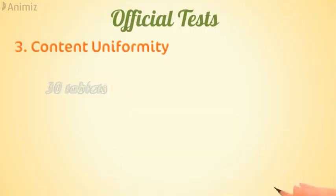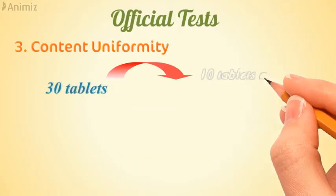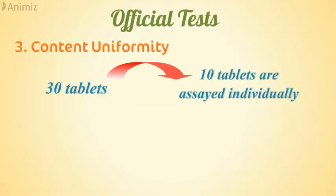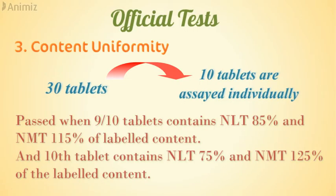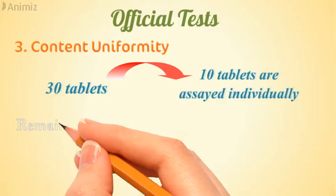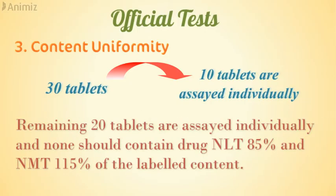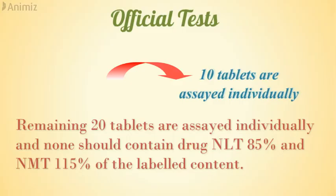The third official test is the content uniformity test. Thirty tablets are taken and 10 are assayed individually. The test passes when 9 out of 10 tablets are within ±15% and the 10th is within ±25% of the labeled content. If results are out of limit, the remaining 20 tablets are assayed individually, and none of the 30 tablets should contain less than 85% or more than 115% of the labeled content.